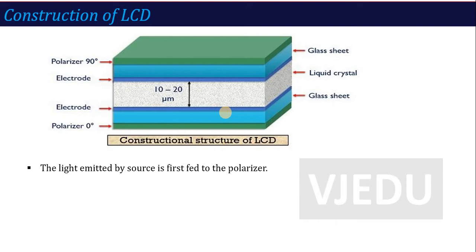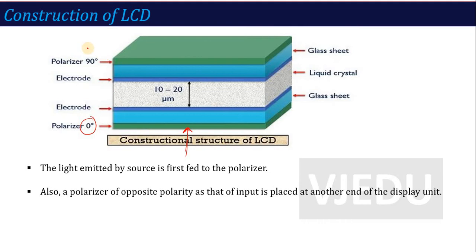We have to emit light on this LCD. There is light emission on this liquid crystal, and then an image is produced. For light production, there are two types of polarization sheets. Once the light is polarized to the first polarizer, which is at 0 degrees, the next polarizer is of the opposite polarity — one is called vertical and one is called horizontal.